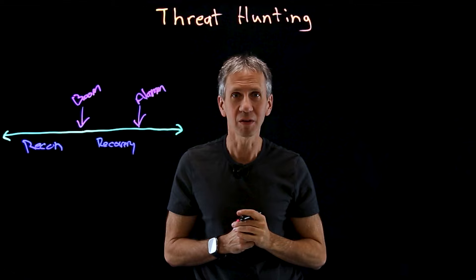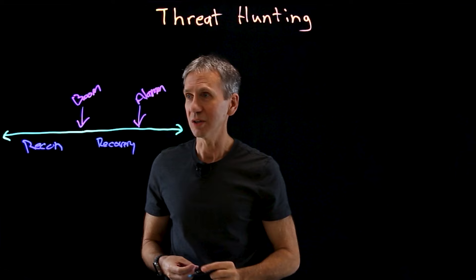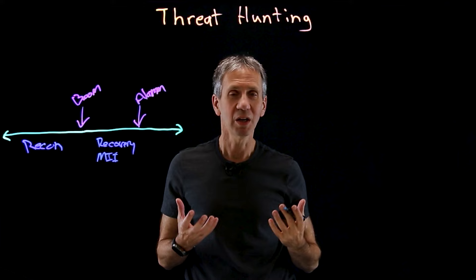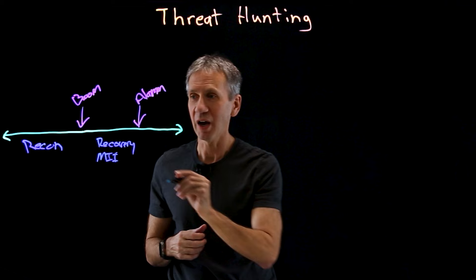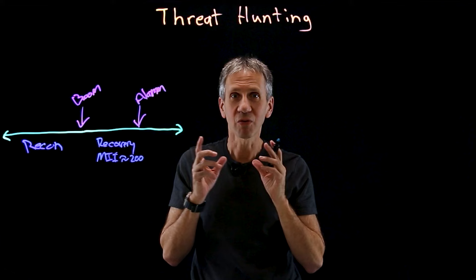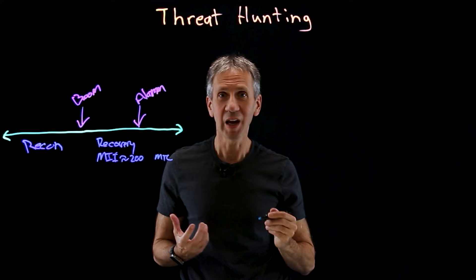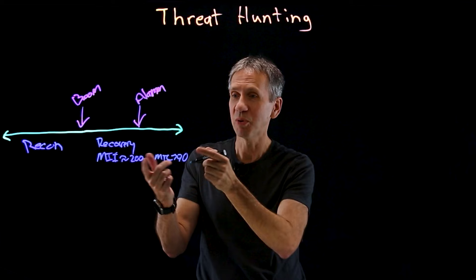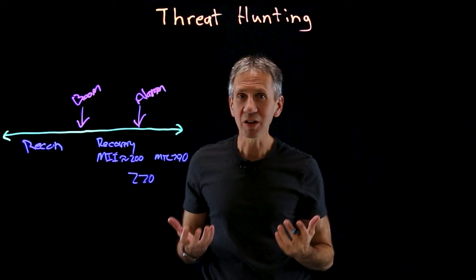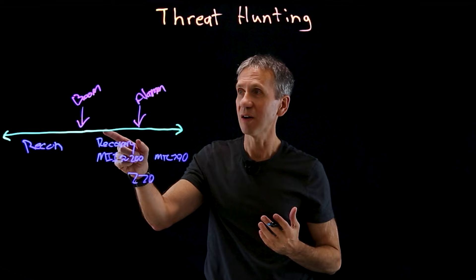If we look at these kinds of intervals, there's the mean time to identify what the problem is. According to Ponemon Institute's survey in 2022, the mean time to identify is on the order of 200 days — that's how long it takes to figure out the bad guy is already in your system. The mean time to contain is on the order of 70 days. Put those together, you're at about 270 days total between when boom occurred and when we finally got everything recovered.